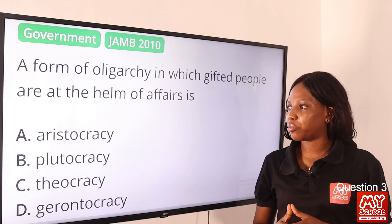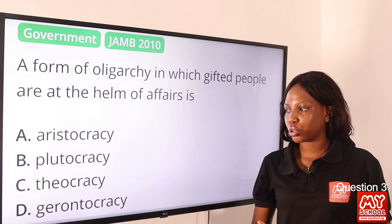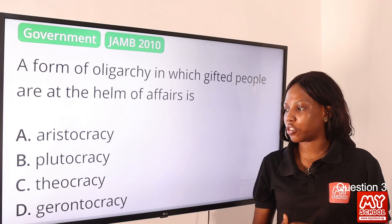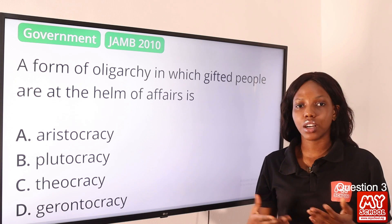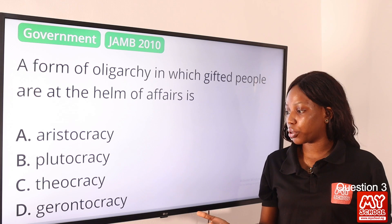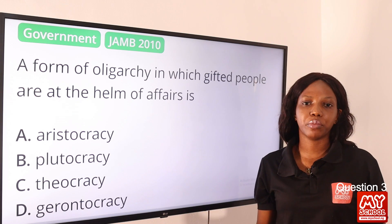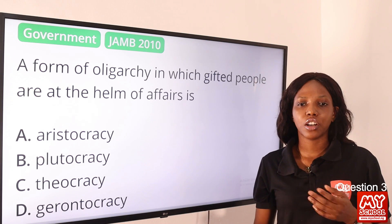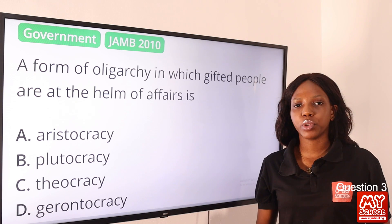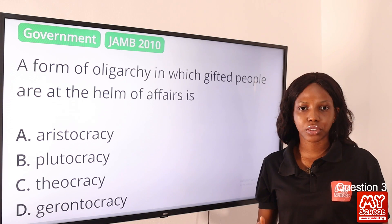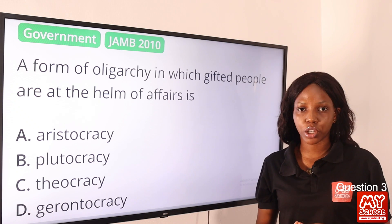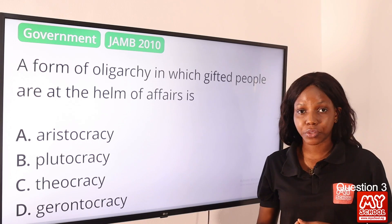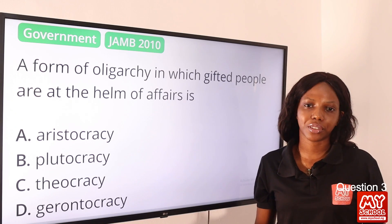Aristocracy is government by the noble. Plutocracy is government by the wealthy. Theocracy is government by God or gods. Gerontocracy is government by old people. Aristocracy refers to people with honorable titles, people belonging to a higher rank. So option A is definitely the answer to this question.